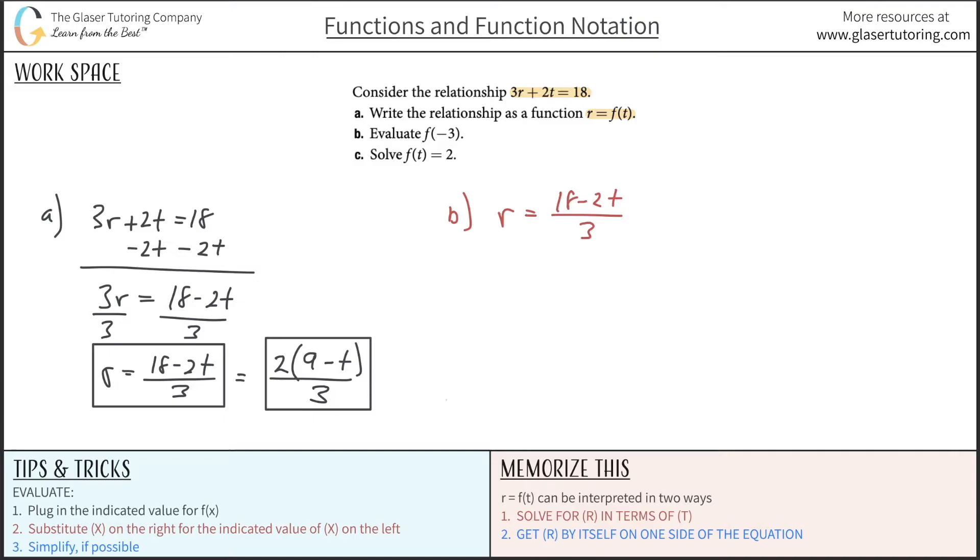Remember, f(t) will equal in this problem f of negative 3. What is consistent amongst the left and the right-hand sides of this equation? Well, I noticed that whatever t was here is t also on the right-hand side. So if that's the case, then I know that t is really going to be negative 3 in this problem for letter b. So anywhere I see t in this equation, I can simply just plug in negative 3 for it, and then we can solve. That's all that it's asking.